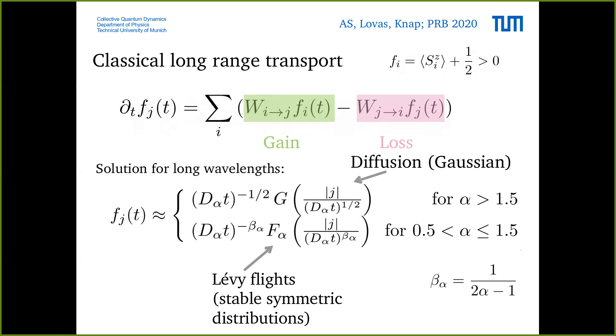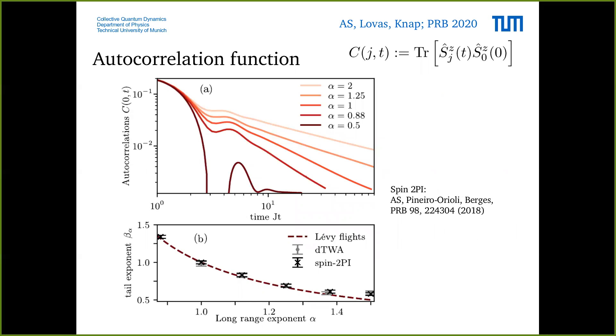This is of course only a classical picture, so the question is does this actually happen in our quantum system. To study this we used non-equilibrium quantum field theory methods - the approximation that we're doing here is essentially a non-equilibrium GW approximation. In this paper we showed that it's actually very powerful in describing non-equilibrium dynamics of spin systems at least qualitatively. We study the non-equal time correlation function which tells us something about transport. We find algebraic tails in the autocorrelation function which are alpha dependent and the exponent agrees exactly with the Levy flight picture.